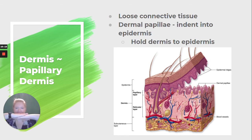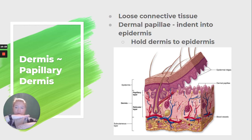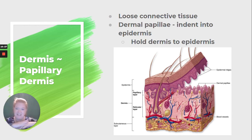The function of those dermal papillae is to hold the dermis to the epidermis. Rather than being flat where the layers could slide more, the papillary dermis is ridged with lots of bumps, so when the epidermis sits on there they're held more tightly together and your skin doesn't slide in layers past each other.